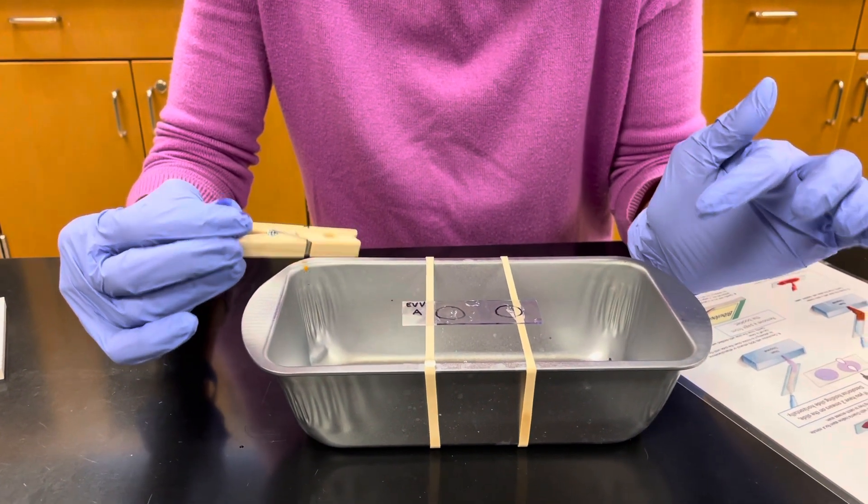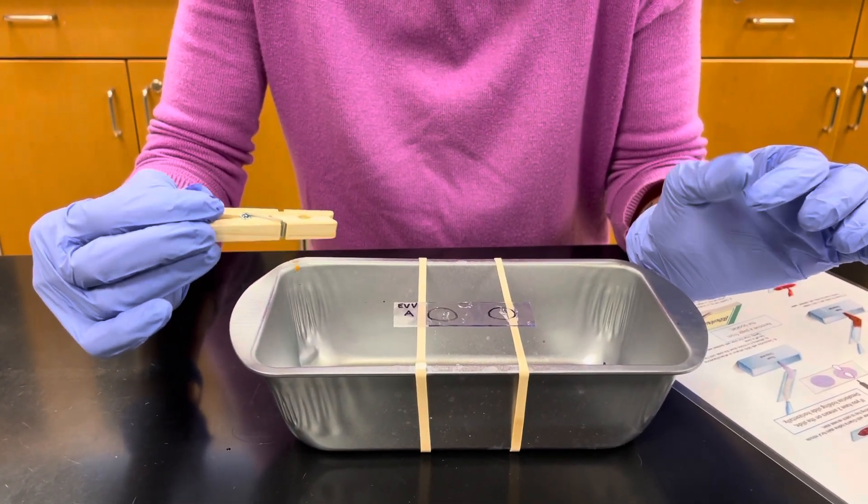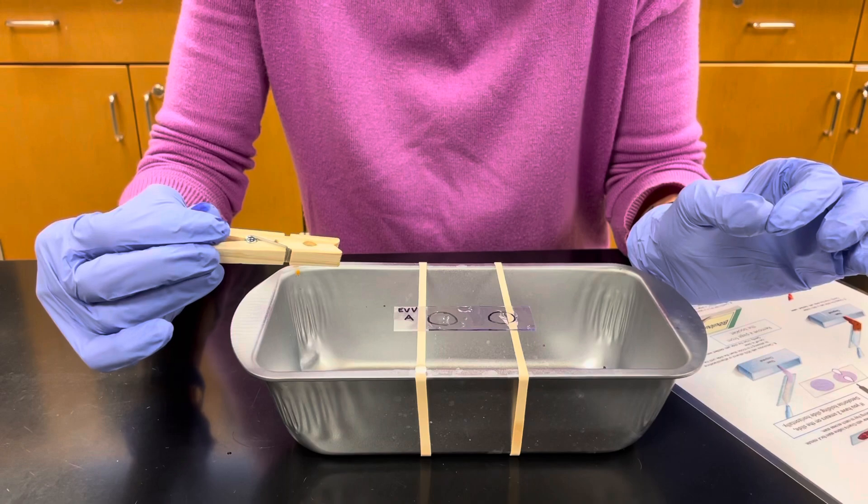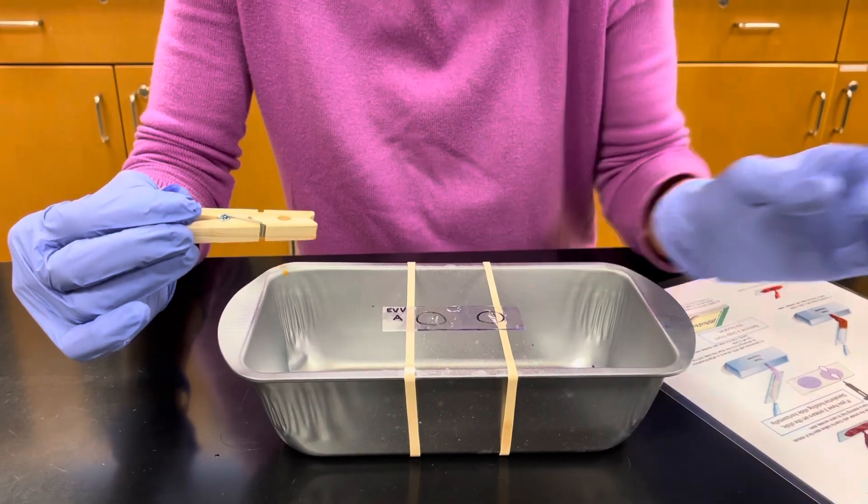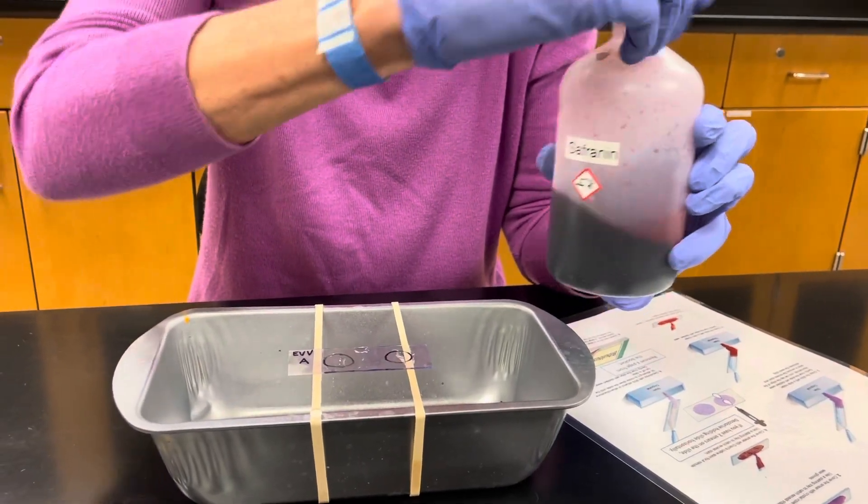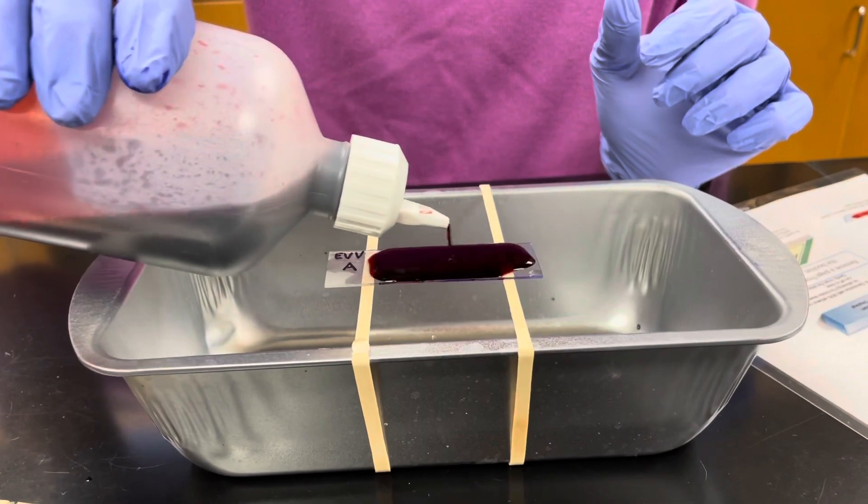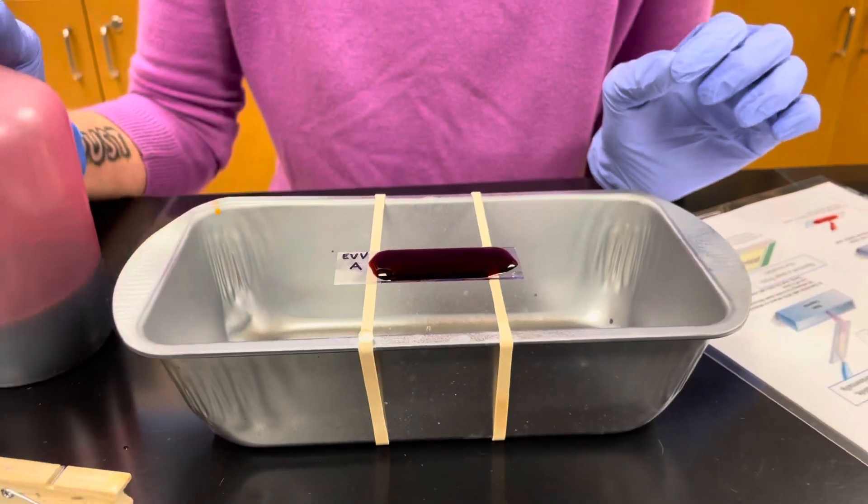Once we've rinsed off our decolorizer, our Gram positive cells are purple but our Gram negative cells are colorless so we need to add the counter stain. Our counter stain is safranin. So go ahead and flood your smear with the safranin. You're going to let this sit for one minute.